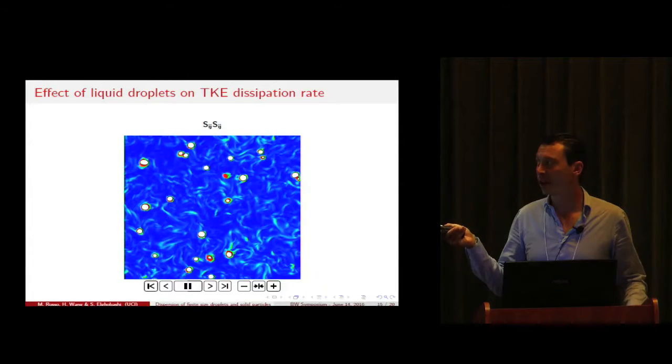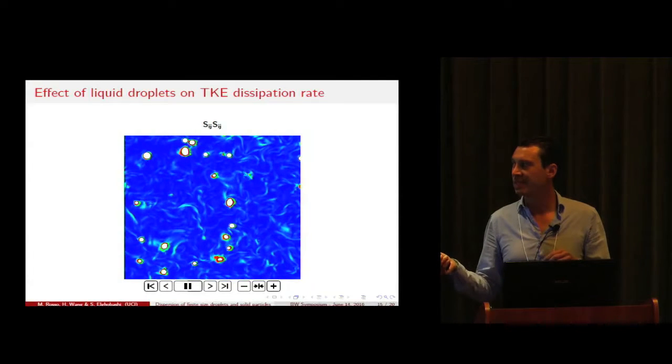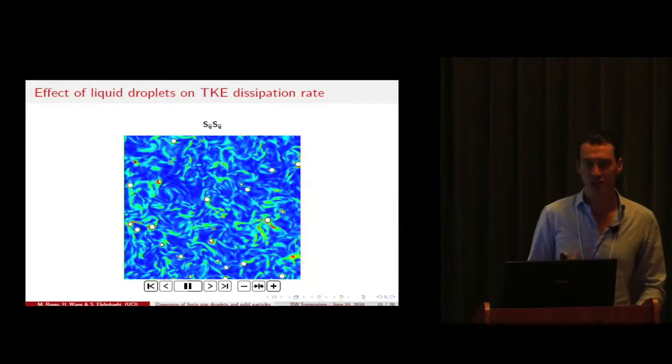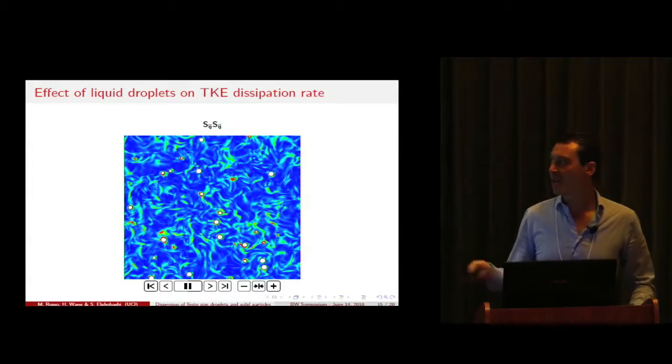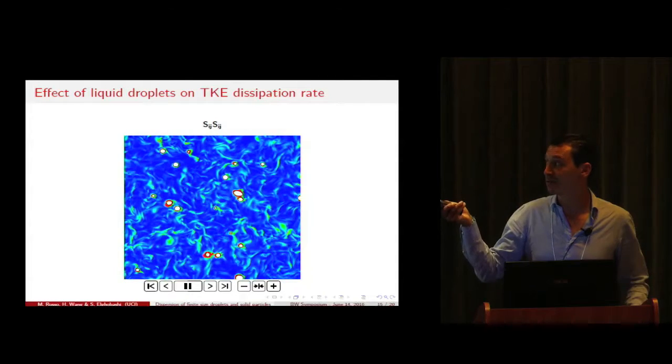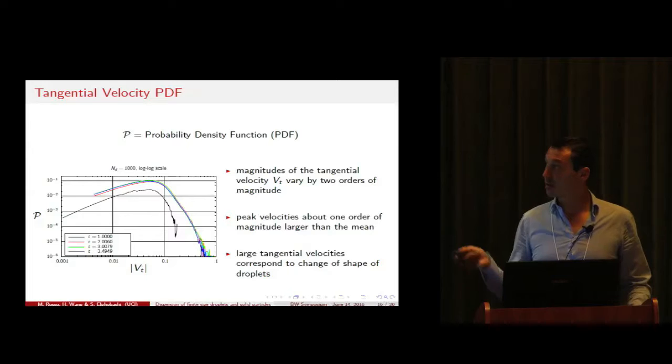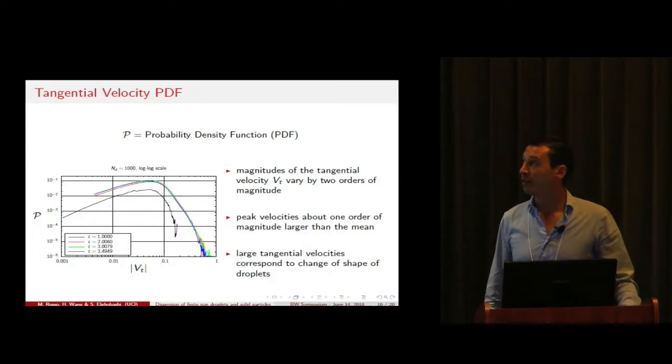We thought that this change of shape must be related to an increased rotational velocity of the droplets themselves because of the large velocity gradients surrounding the droplets.